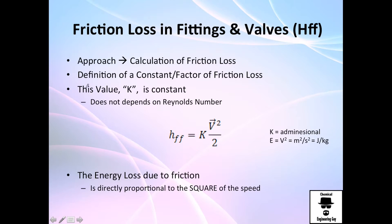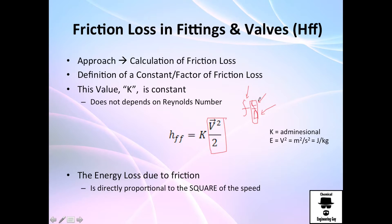We're going to use an approach very similar to the one for pipes. You can see there's a velocity head — velocity squared divided by two — but instead of using f·L/D (friction factor, length, and diameter of pipe), which doesn't make sense through a valve, we use a constant K, which is a value determined experimentally from many experiments.